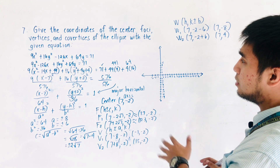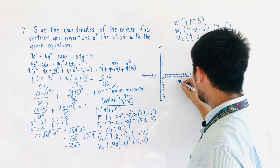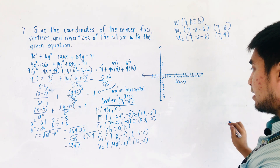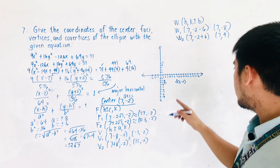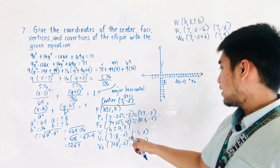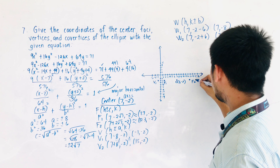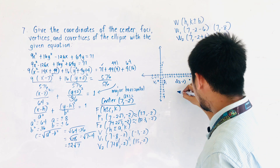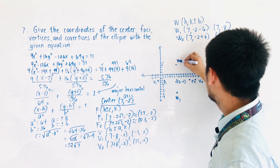We're now ready to sketch the ellipse. The center is at (7, -2). The foci F1 is at approximately (1.7, -2) and F2 at approximately (12.3, -2). Vertex V1 is at (-1, -2) and V2 at (15, -2). Co-vertex W1 is at (7, -8) and W2 is at (7, 4). Our ellipse is horizontal, and connecting these points gives us the ellipse. This corresponds to the standard equation: (x - 7)² / 64 + (y + 2)² / 36 = 1.